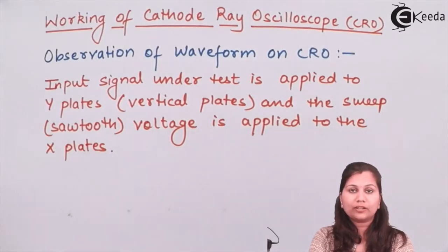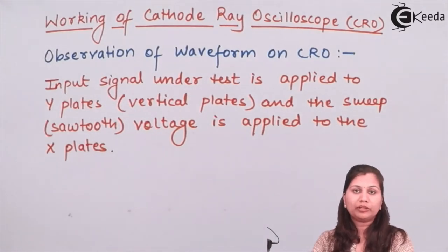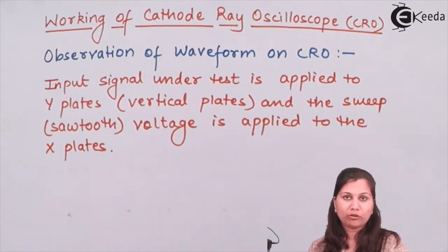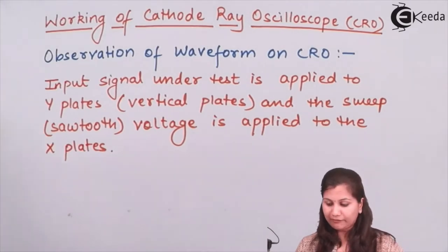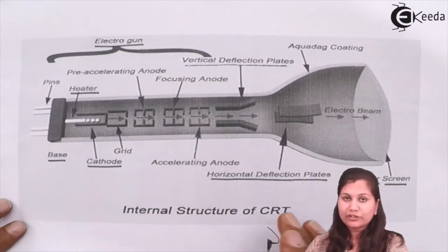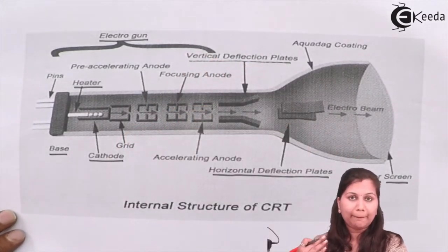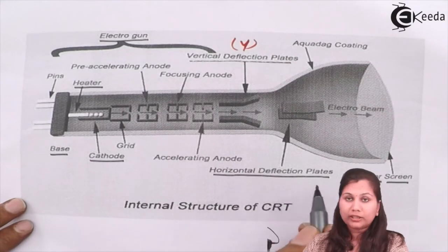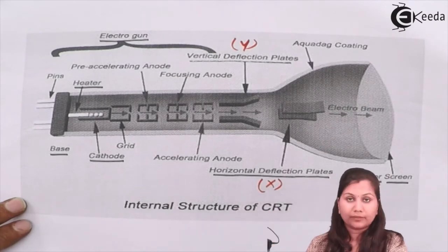In the CRO we have two inputs: the vertical input and the horizontal input. The vertical input is the input signal which we want to measure or whose waveform we want to display on the screen. The vertical deflection plates cause movement in the up and down direction, that is in the Y direction. The horizontal deflection plates cause movement in the left to right direction, that is in the X direction.